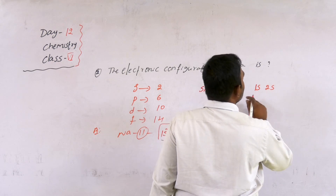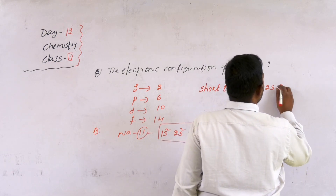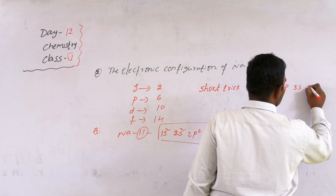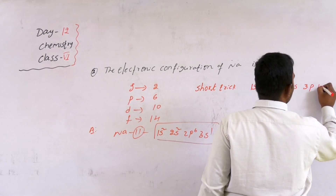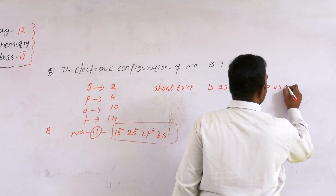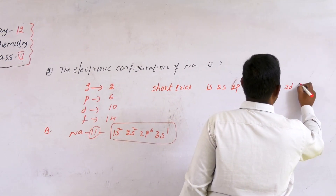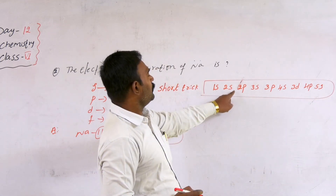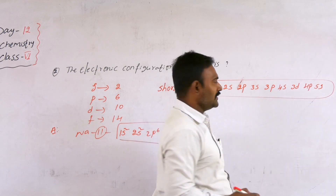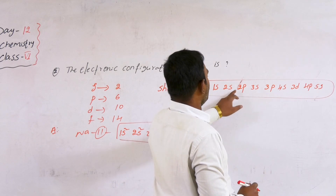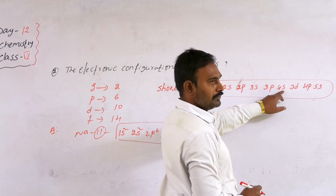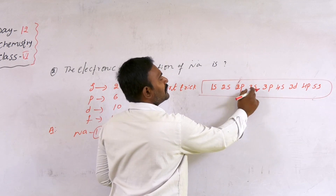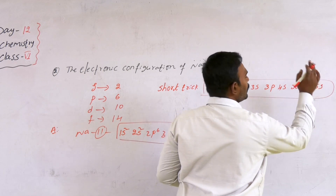The mnemonic to remember the orbital filling order is: school, school, public school, public school. Using this, the sequence is 1s, 2s, 2p, 3s, 3p, 4s, 3d, 4p, 5s — and so on.